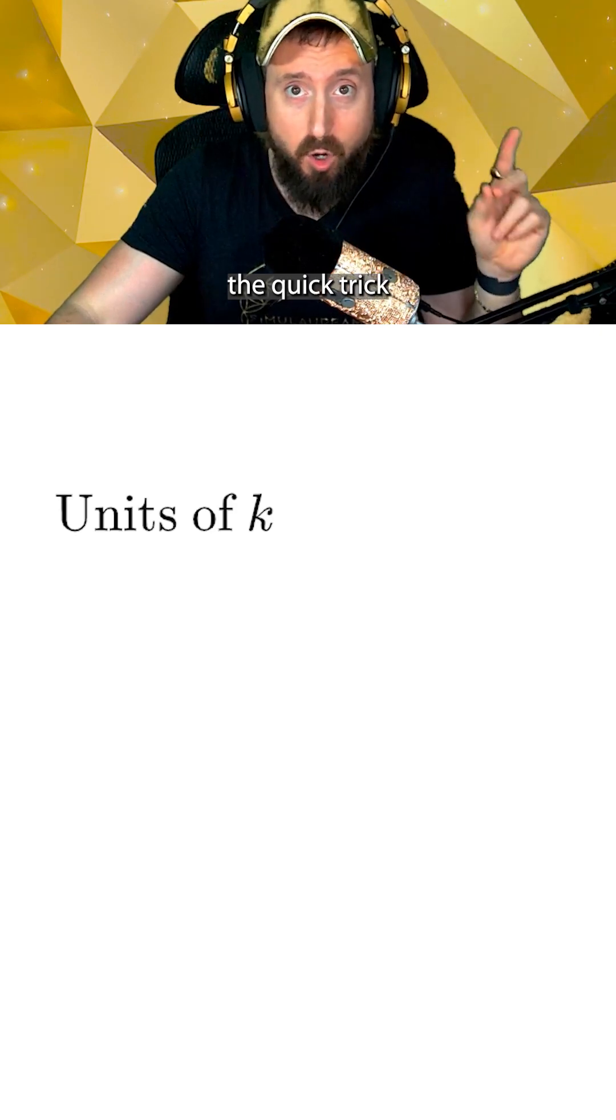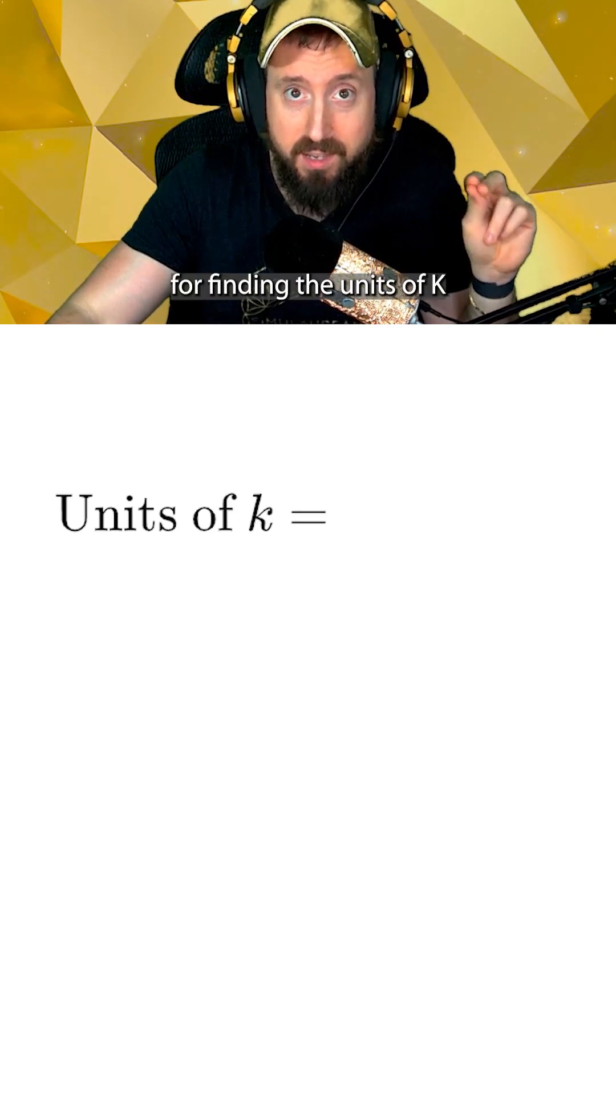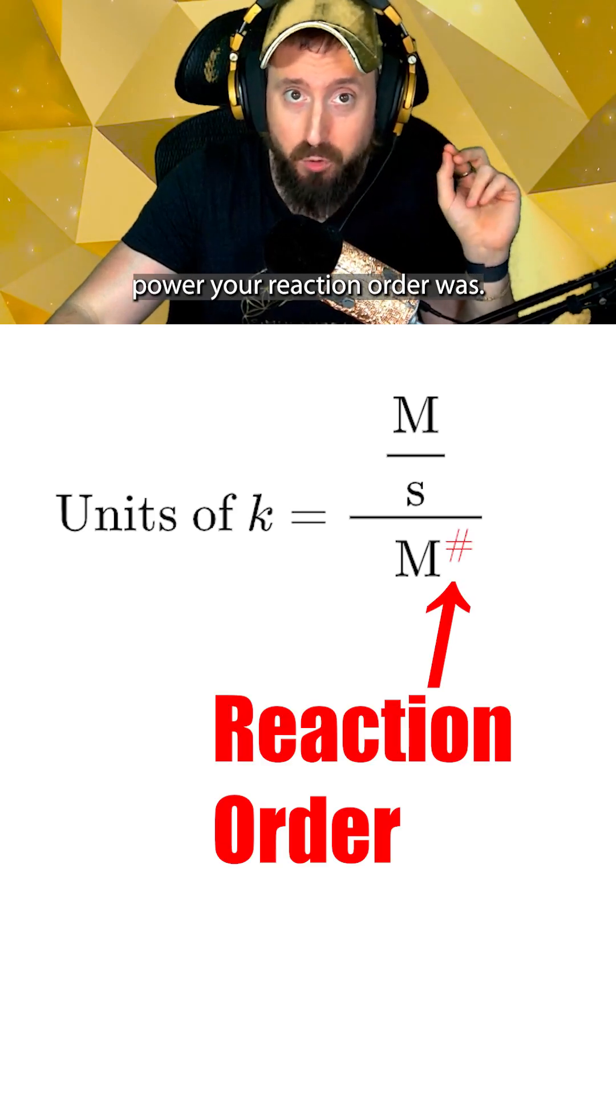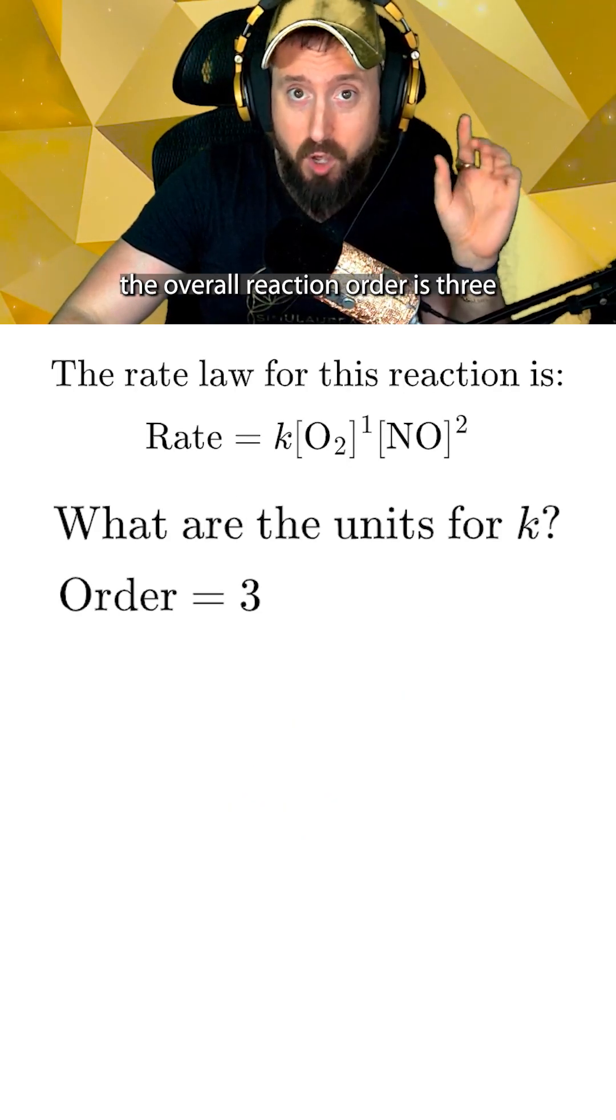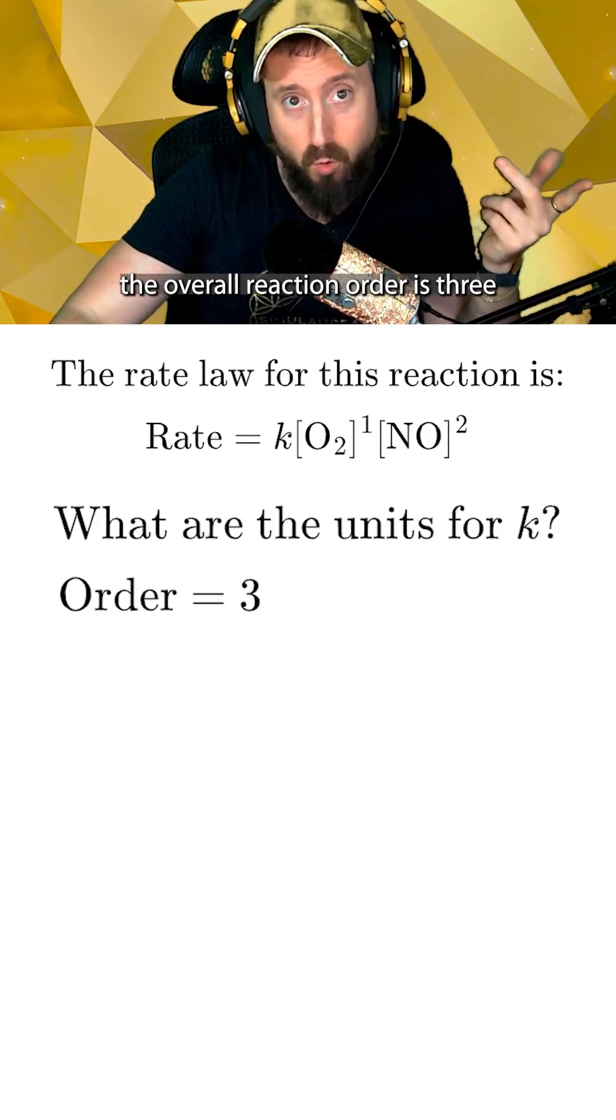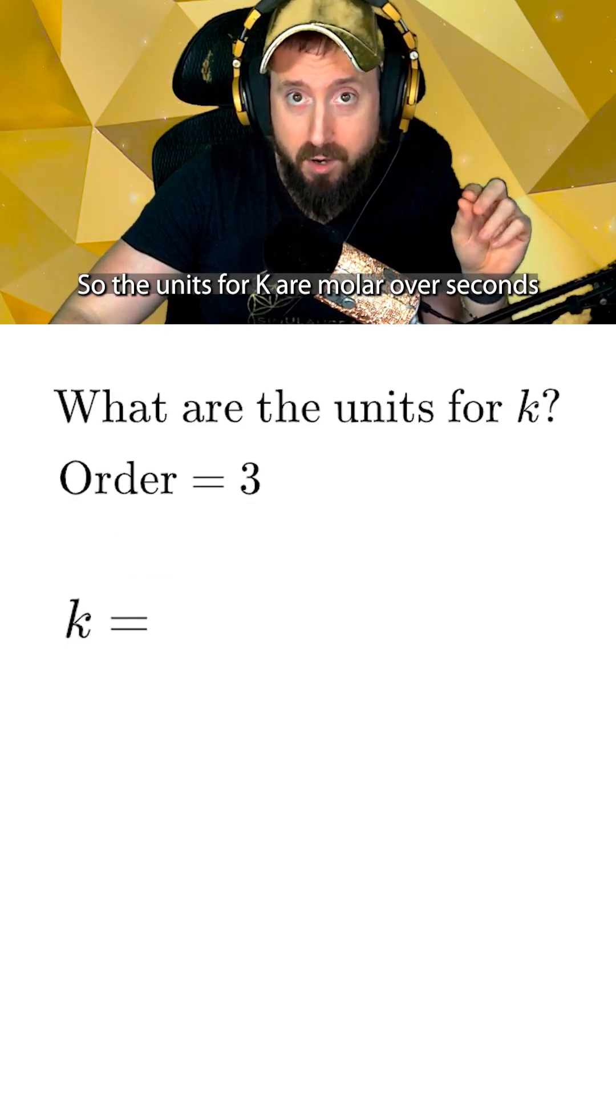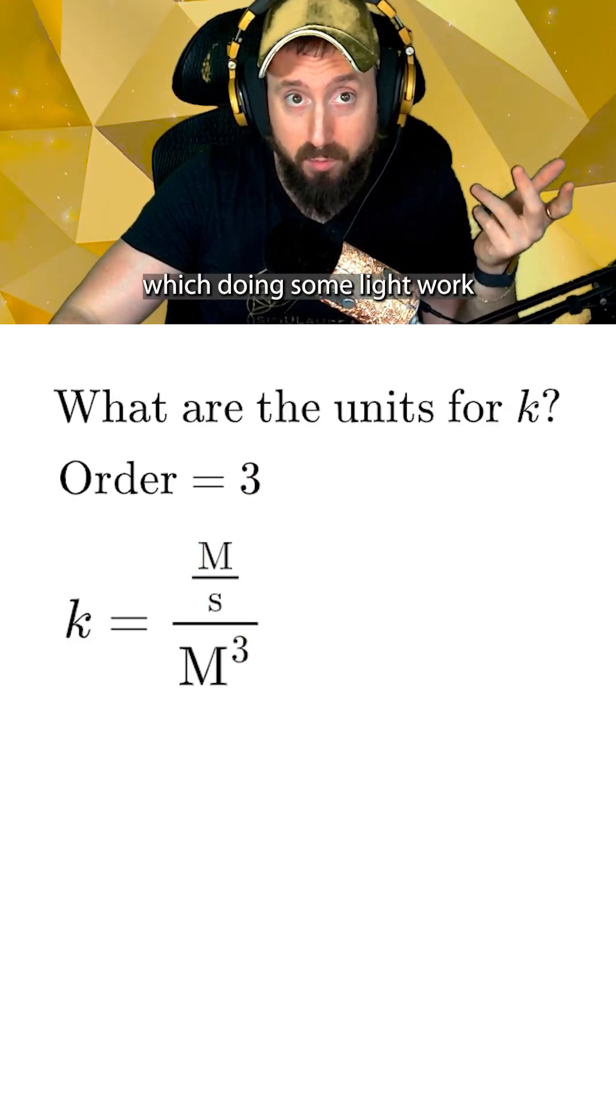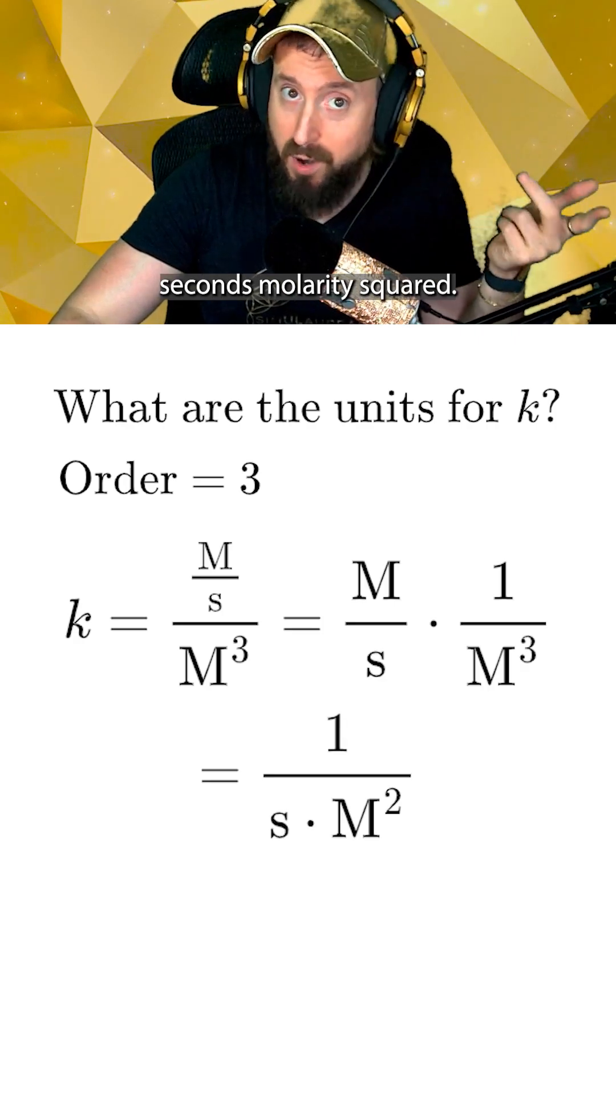Once you have this, the quick trick for finding the units of K is to take molar over seconds and divide this by molar to the whatever power your reaction order was. So in this example, the overall reaction order is three or third order. So the units for K are molar over seconds divided by molar to the third, which doing some light algebra gets you one over seconds molarity squared.